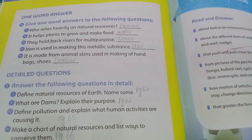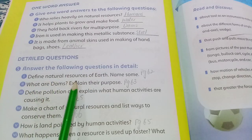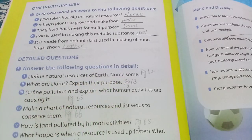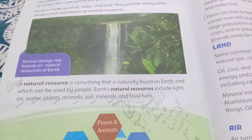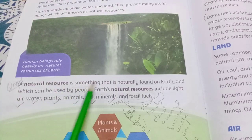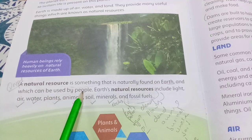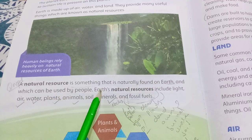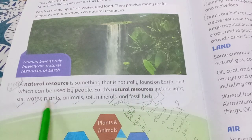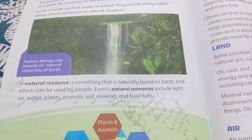Answer the following questions in detail. Define natural resources of Earth and name some. A natural resource is something that is naturally found on Earth and which can be used by people. Earth's natural resources include light, air, water, plants, animals, soil, minerals and fossil fuels.